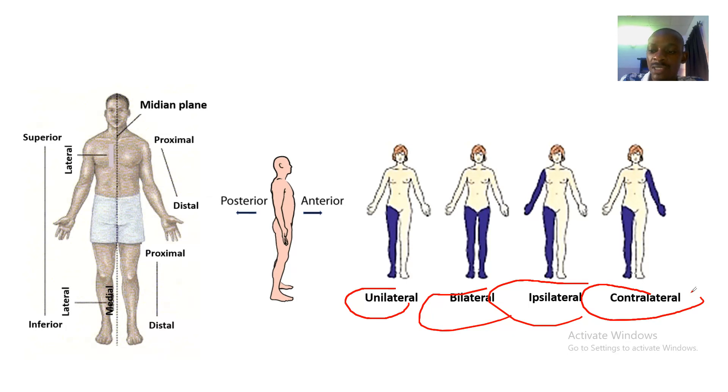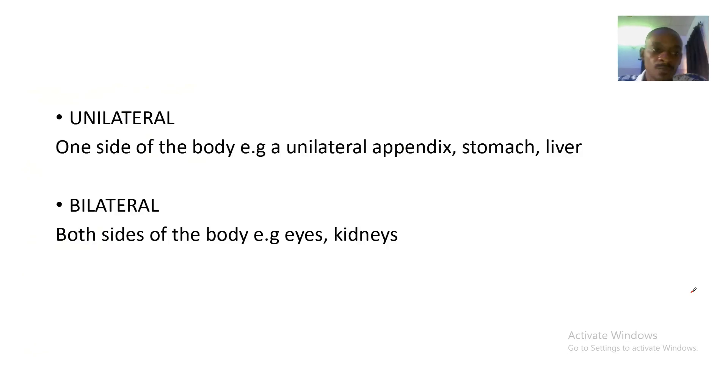First of all we have unilateral. Unilateral is one side of the body, where you have unilateral appendix. The stomach is located on one side of the body, the liver is also on one side of the body, so they are unilateral organs. Bilateral are located on both sides of the body.